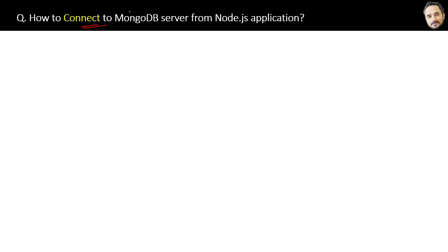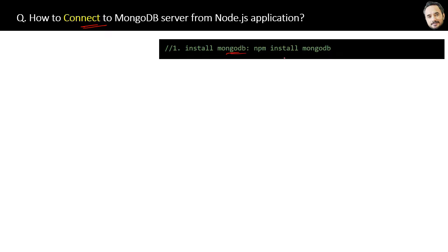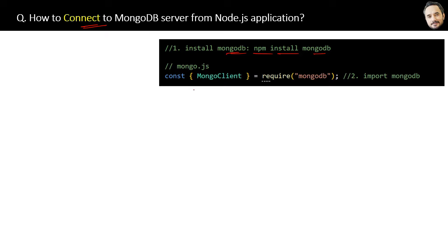How to connect MongoDB server from a Node.js application? Before performing CRUD operations from Node.js to MongoDB, we must set up the connection between the two. There are seven steps. First, install MongoDB in your Node.js application using the command: npm install mongodb. Second, create a separate file for MongoDB connection — this is the mongo.js file, which will only handle the connection. Then import the MongoDB package which you just installed, and create a MongoClient variable from the package.